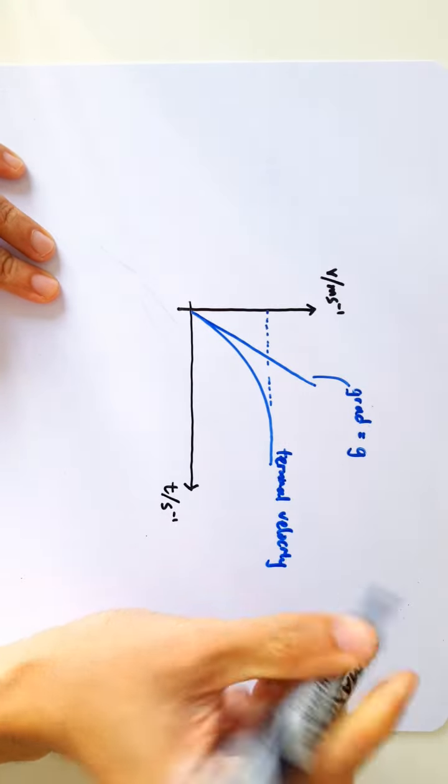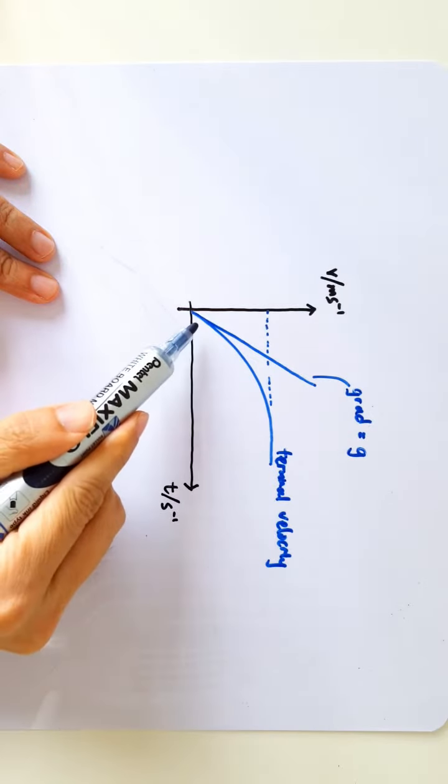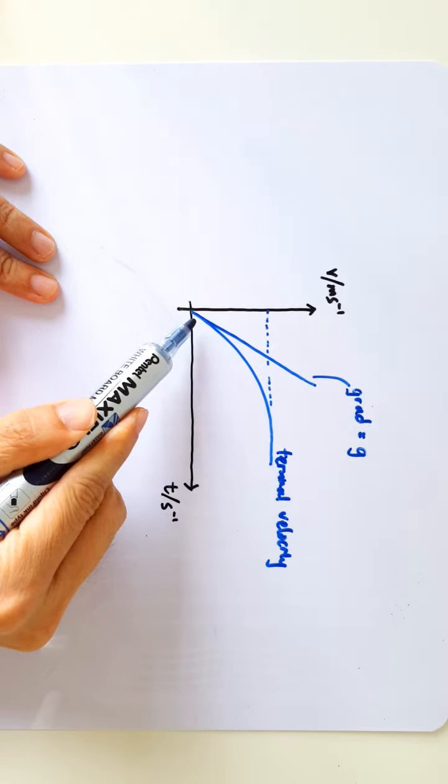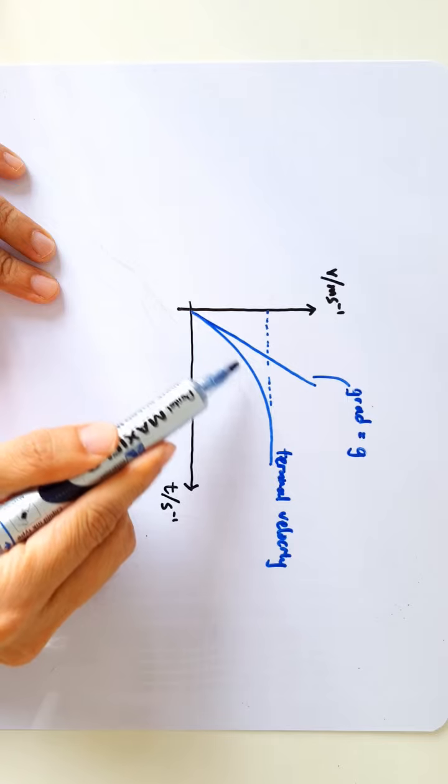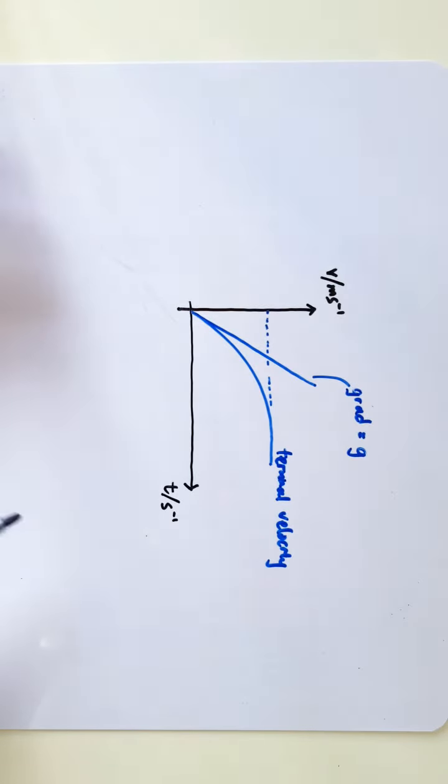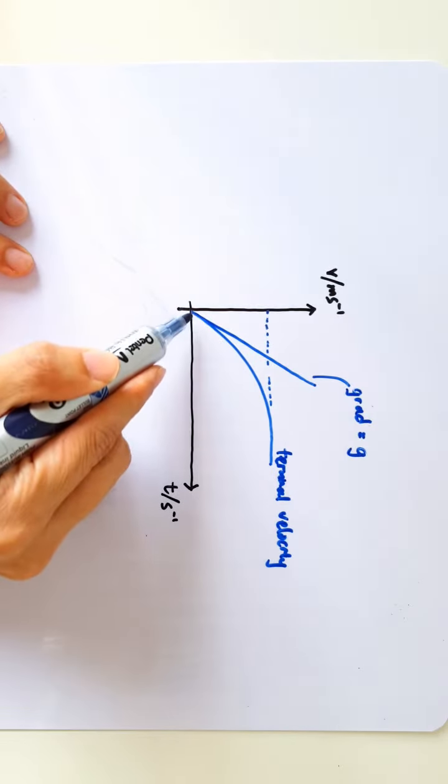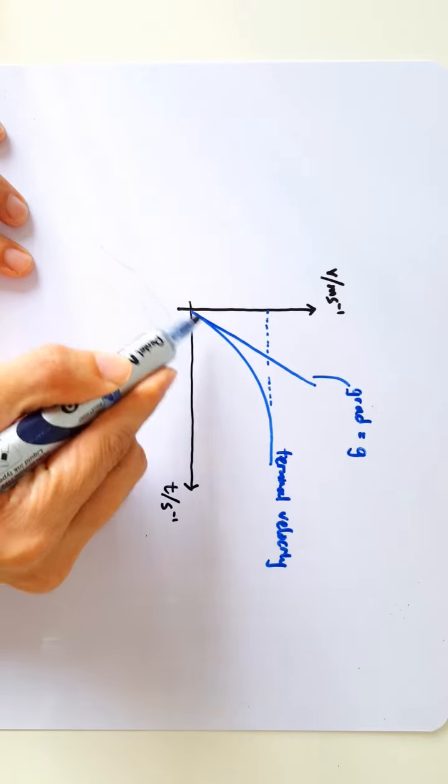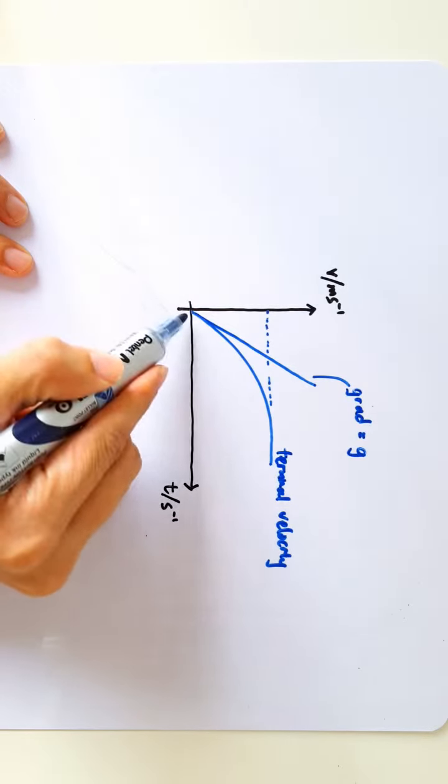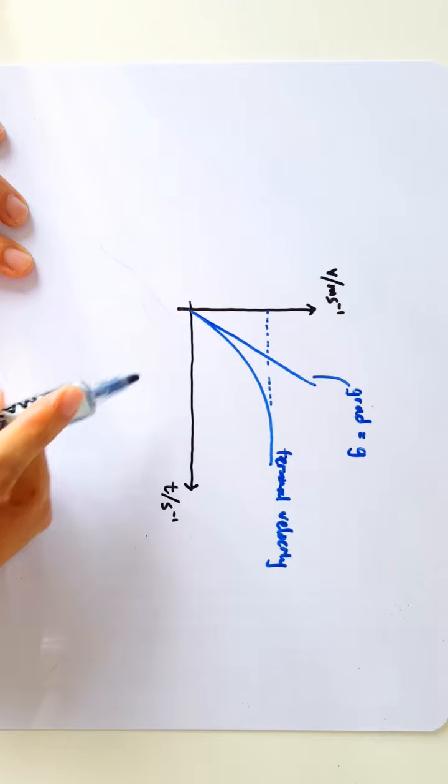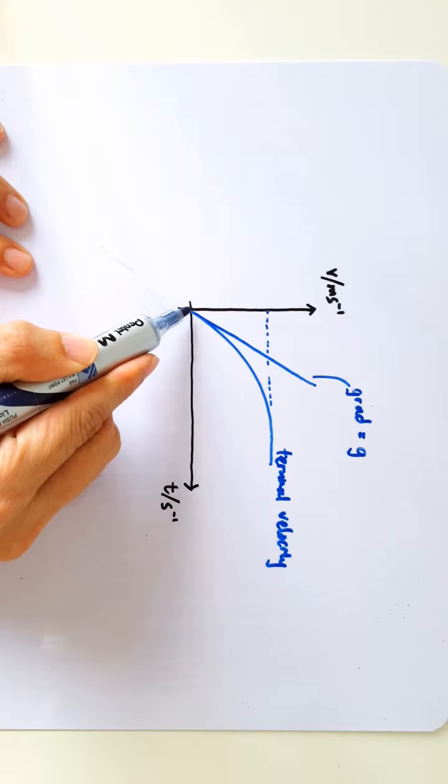The one given in the question is obviously an object falling under the influence of air resistance. But at this point here, these two graphs actually share the same gradient because at this point, the object has a velocity of zero.